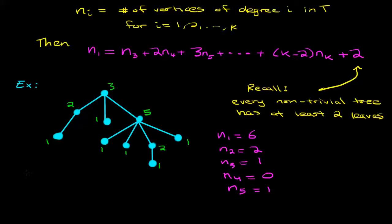If we take a look at the right hand side of the equation, we're going to have n_3 plus 2n_4 plus 3n_5 plus 2. Substituting in the values we get 1 plus 0 plus 3 plus 2, and that does equal 6, which is our n_1. So in this example we see that the theorem holds.